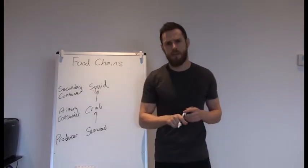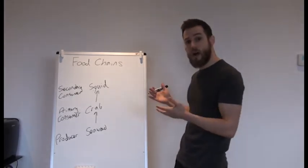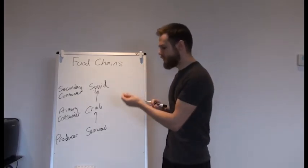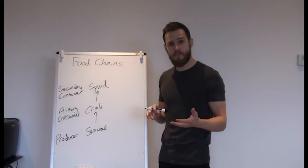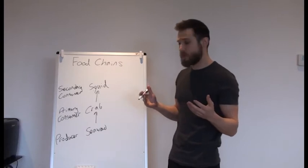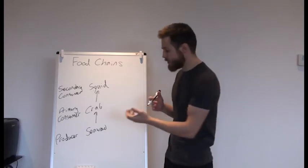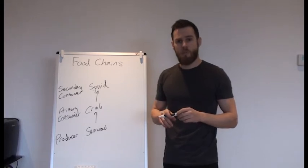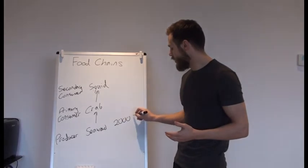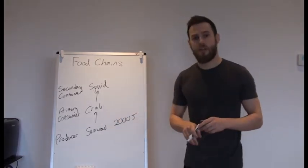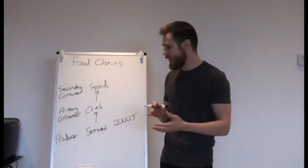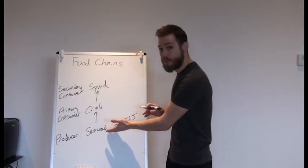Now the last thing we need to understand is what happens to energy as we pass along this chain. Well, since the producer gets its energy from the sun and that energy is going to be a maximum at this point, it's going to have drawn energy from the sun and stored it in the seaweed. Well, let's imagine some numbers. Let's take 2000 joules of energy. Unfortunately, by the time it gets into the crab, some of that energy is going to be lost and wasted.